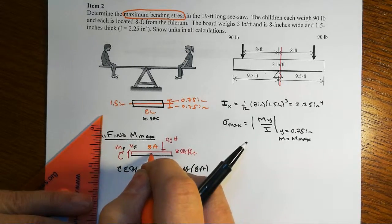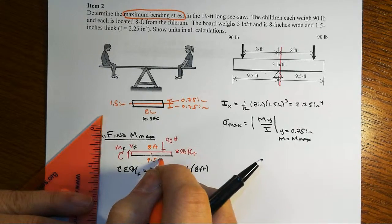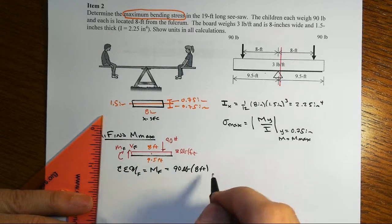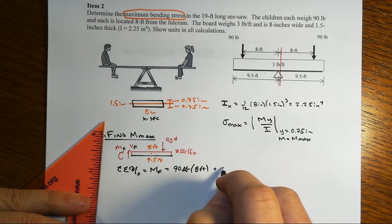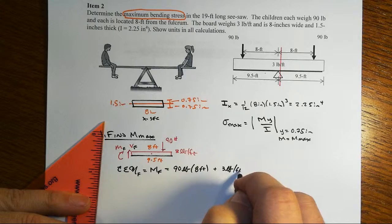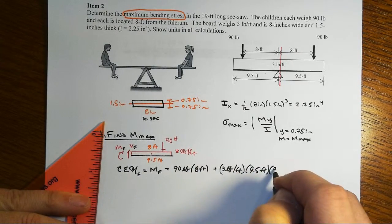And so we'll have our moment caused by the child at 90 pounds times 8 feet. And then the distributed load will act at the centroid of the 9.5-foot length, so we'll have plus 3 pounds per foot times 9.5 feet for the resultant times its moment arm.